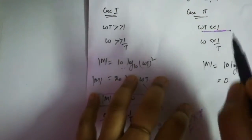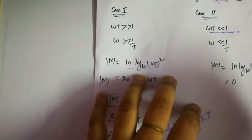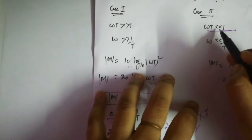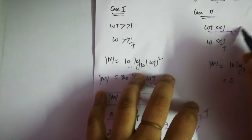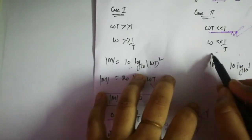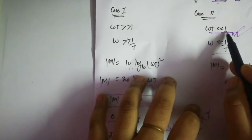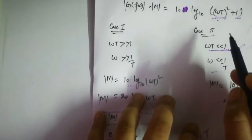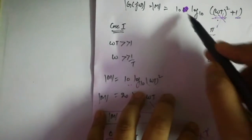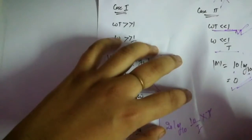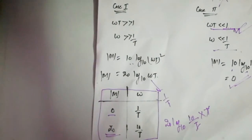The second case is when ωT is very much less than 1. Whether it is 1/(sT+1) or (sT+1), when ωT << 1, the magnitude is always 0 dB. This is because 10·log₁₀(1) = 0. So at low frequencies the magnitude is always 0 dB.